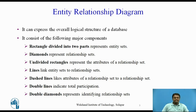An Entity Relationship Diagram can express the overall logical structure of a database graphically. It consists of rectangles divided into two parts representing entity sets. The first part, which is shaded blue, contains the name of the entity set, and the second part contains the names of all attributes of the entity set.